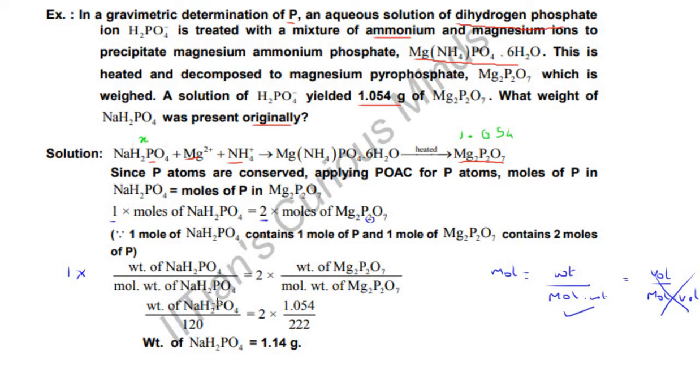We have to find weight of NaH2PO4. Molecular weight can always be found out - they're not given here but will be provided in actual questions. The main thing given is weight of Mg2P2O7 is 1.054 grams. This is only one variable, so we can easily find it using cross multiplication. Finally, the answer comes out to be 1.14 grams.